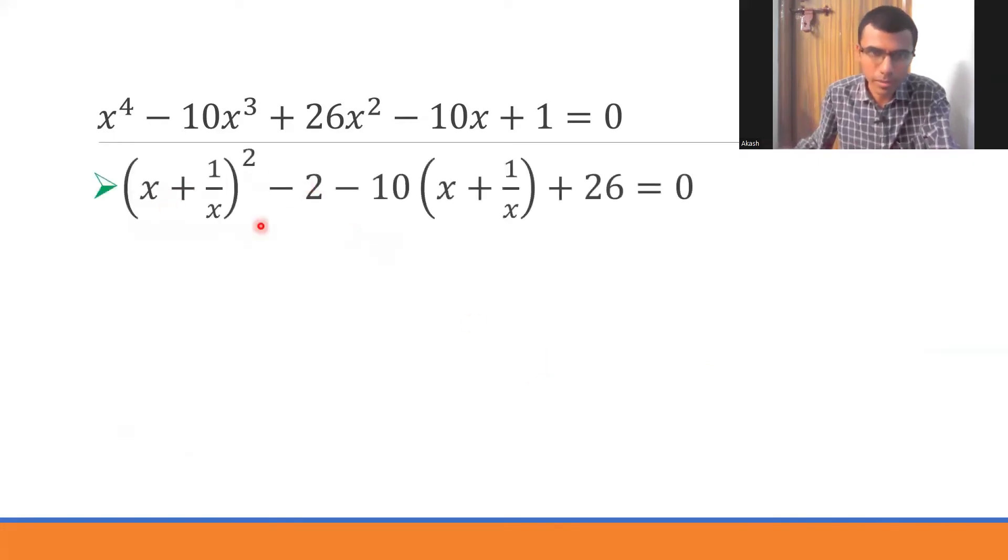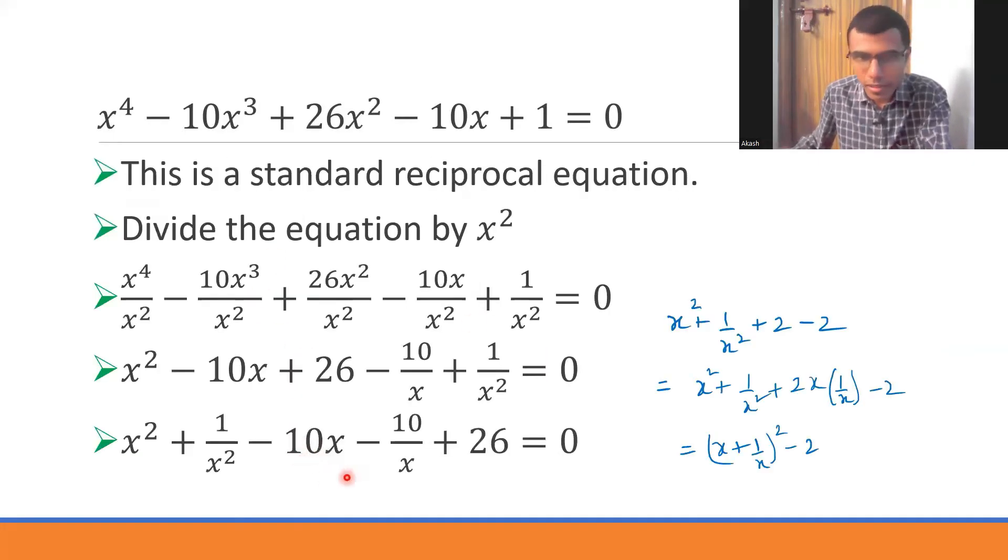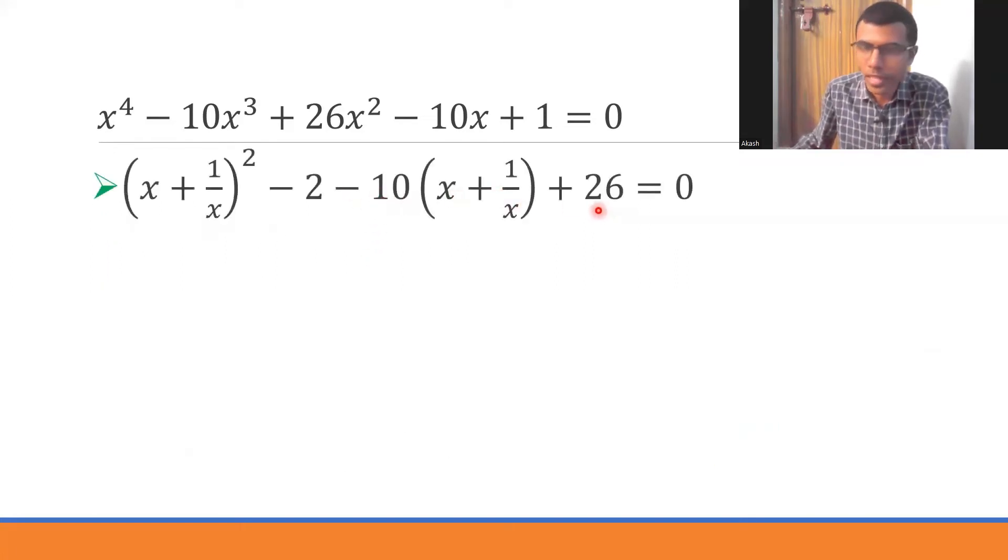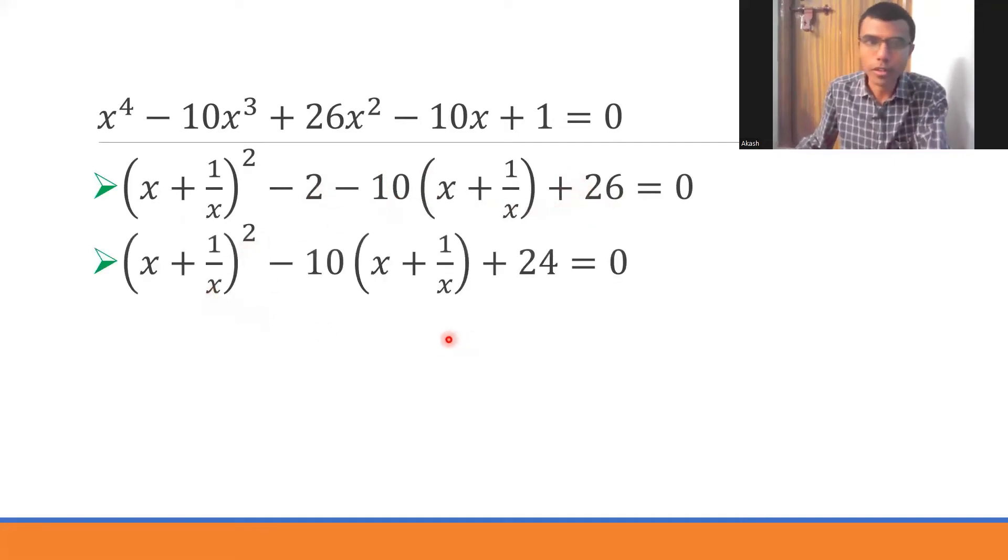Ultimately these first three terms would come out as (x + 1/x)² - 2. So that's why I got here (x + 1/x)² - 2, and in these two terms I took -10 common, I would be left out with (x + 1/x), and then +26 equals 0. Now -2 + 26 would be 24, so this is what I am left out with.